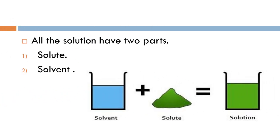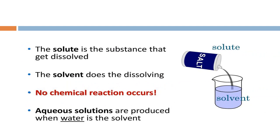All solutions have two parts: the solute and the solvent. Solvent plus solute gives us a solution. The solute is the substance that gets dissolved in the solution, while the solvent does the dissolving.